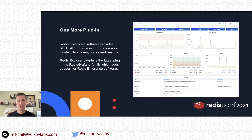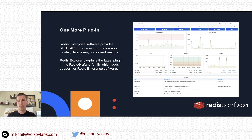I want to talk about one more plugin today. Redis Enterprise Software provides a REST API to retrieve information about cluster, databases, nodes, and metrics. The Redis Explorer plugin is the latest plugin in the Redis Grafana family, which adds support for Redis Enterprise software. On this dashboard you can see license information, average latency on the cluster, number of requests, CPU and memory information, and all registered modules. There are also traditional dashboards for databases and nodes, and you can create your own dashboard for your clusters.